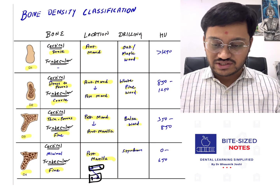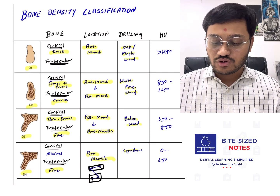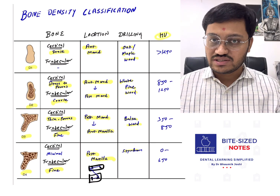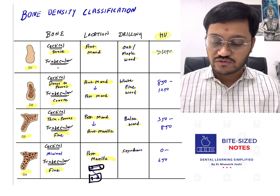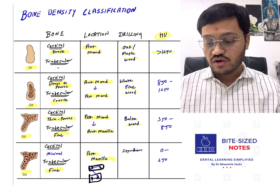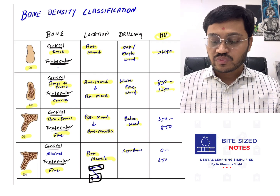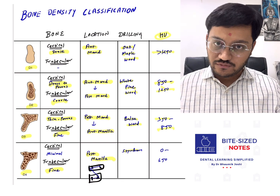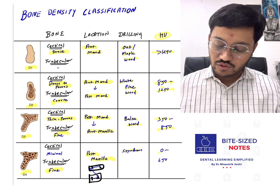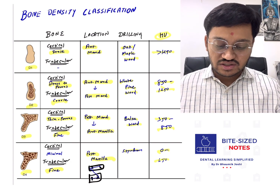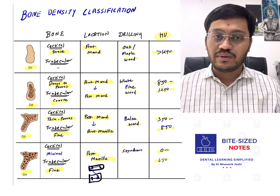Before surgery, to determine which type of bone is present, we perform a CT scan. Based on the Hounsfield unit values, we can identify the bone type. For D1, the Hounsfield value is 1250 or above; for D2, it is 850 to 1250; for D3, it is 350 to 850; and for D4, it is 0 to 350 Hounsfield units. Based on this knowledge of bone densities, we can plan the implants accordingly.